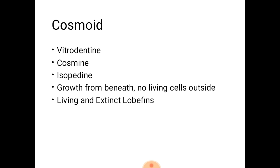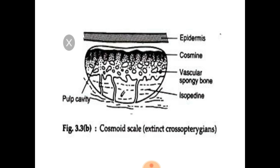Cosmoid scales also have an enamel-like layer called vitrodentine. Below that is a cosmin layer, and below the cosmin the cellular portion isopedine is present. The main feature of cosmoid scales is that they can grow only from beneath, not from the outside, because dead cells are present on the outside. They are seen in the living and were present in the extinct lobe-finned fishes. This is the diagram of the cosmoid scale.